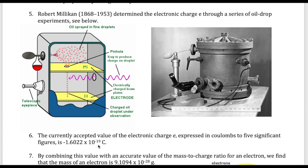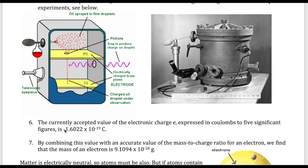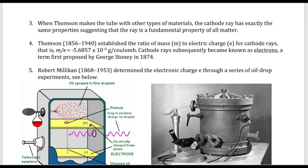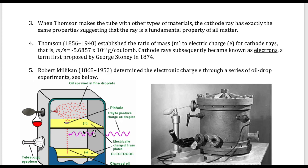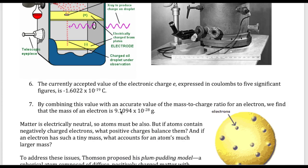And that number is negative 1.6 times 10 to the minus 19 Coulomb. Coulomb is a unit of charge. The negative here is to indicate that an electron is a negatively charged particle. Now, once you have this number, which is your e, your charge, you can combine that with the mass to charge ratio to calculate the mass of the electron, which is a very tiny number. It's 9.1 times 10 to the minus 28 grams.